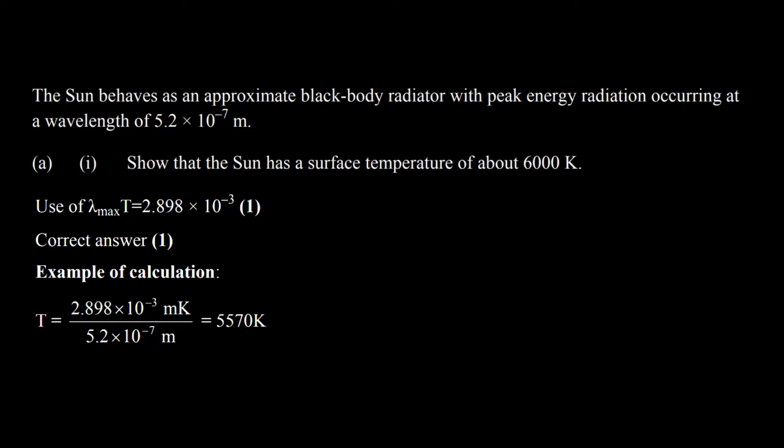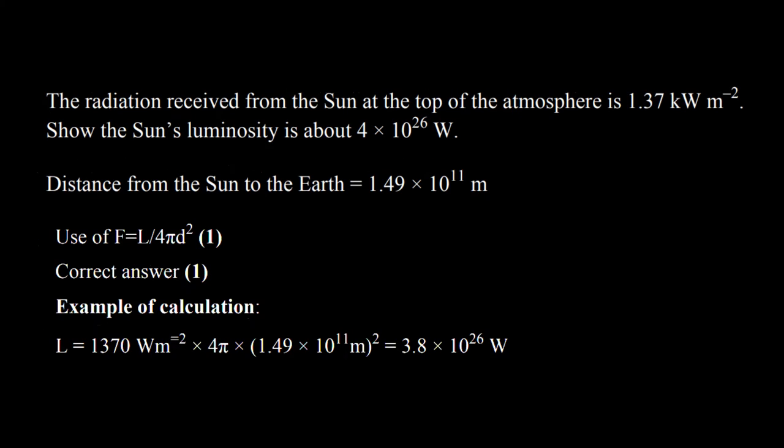This is another example to find out the luminosity with the help of the flux, which is already given here as 1.37 kilowatts per meter squared. We have used the formula flux equals luminosity divided by 4 pi d squared.